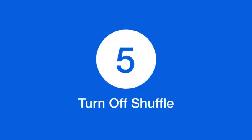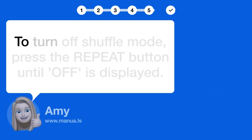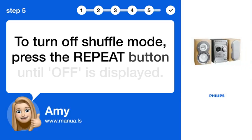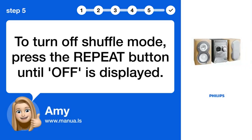Step 5. Turn off shuffle. To turn off shuffle mode, press the REPEAT button until FM is displayed.